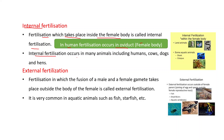Internal fertilization occurs in many animals including humans, cows, dogs, and hens. Some aquatic animals like sharks and octopuses also undergo internal fertilization.